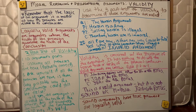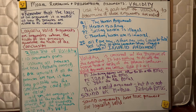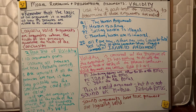Let's go back to this idea that validity is concerned with the structure of the argument. Validity has nothing to do with the factual truth or falsity of the premises and the conclusion. This means that valid arguments, even if they have the correct structure, may still contain false premises and/or a false conclusion. Just because the structure is correct doesn't mean the argument is a good argument, because it could contain factually false information.